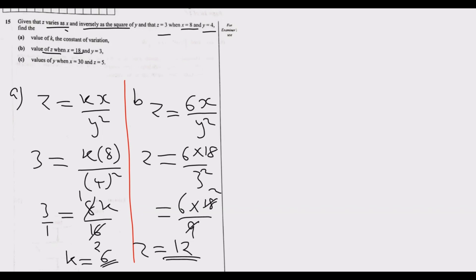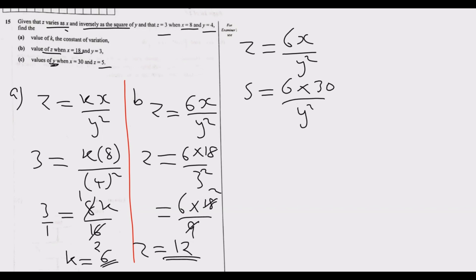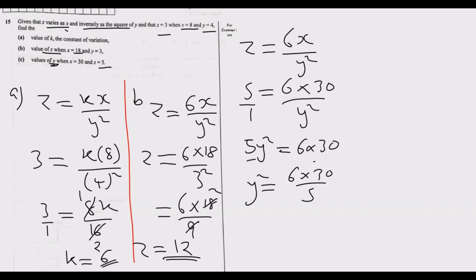Part c: find the values of y when x equals 30 and z equals 5. Using the same formula z = 6x / y², we put in z = 5 and x = 30: 5 = 6 × 30 / y². This is over 1, so cross-multiplying gives 5y² = 6 × 30. Dividing both sides by 5: y² = 6 × 30 / 5.